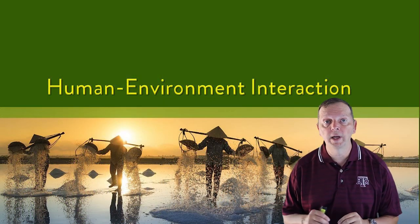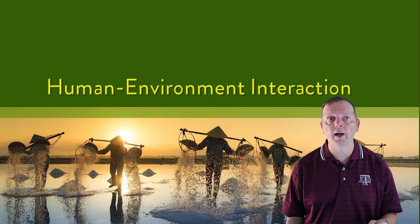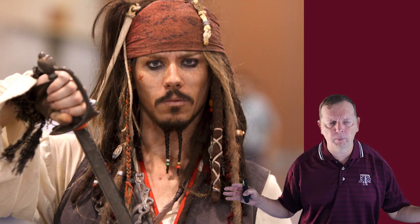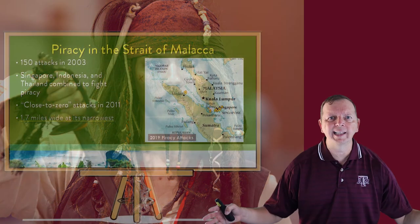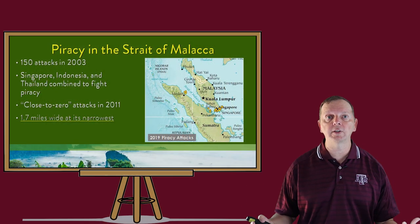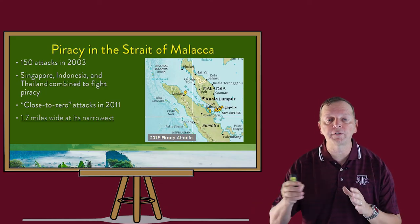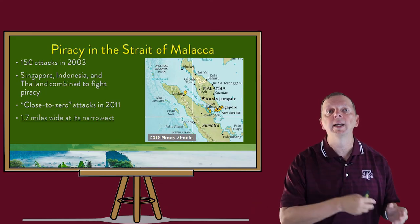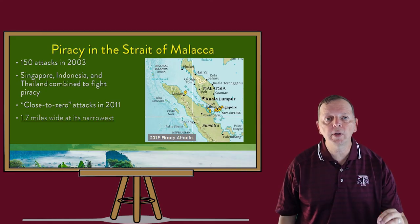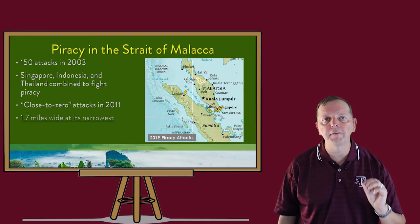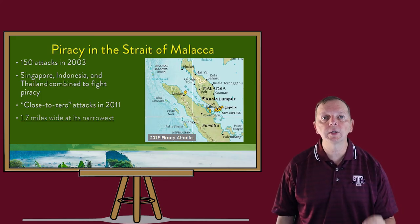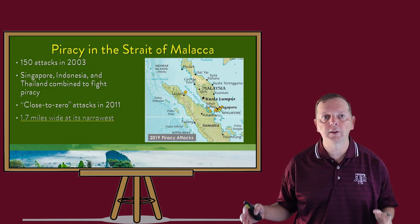What are some other ways that Southeast Asians interact with their environments? Well, first of all, there are pirates — and not like Jack Sparrow. Well, actually, pretty much exactly like Jack Sparrow. Modern pirates do exist, and the Strait of Malacca, found just to the west of the Malay Peninsula, is often a site of modern piracy. In 2003, there were over 150 pirate attacks, which prompted three Southeast Asian countries to combine efforts to fight the problem.